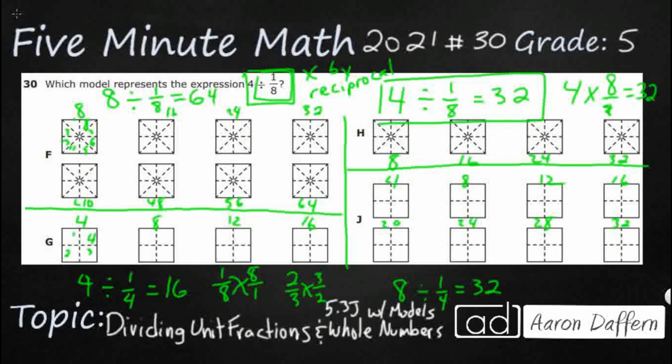So, our answer is going to be H. That's the best representation of 4 divided by 1/8.